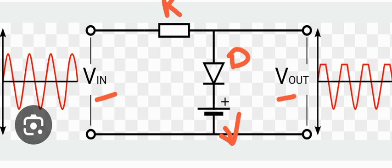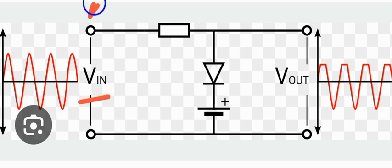There is an input at these two points and the output is taken across these two points. Now we want to understand how the circuit is working - it has an input and it has an output as shown.